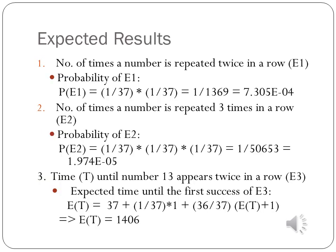For the first event, on average, how often is a number repeated twice in a row for a given number of spins? For a fair roulette, each spin is independent of other spins. The chance of getting a number in one spin is 1/37, and the chance of getting the same number in the next spin remains 1/37. The probability of getting the same number in two consecutive spins is 1/37 × 1/37, which equals 0.00073 (×10⁻⁴).